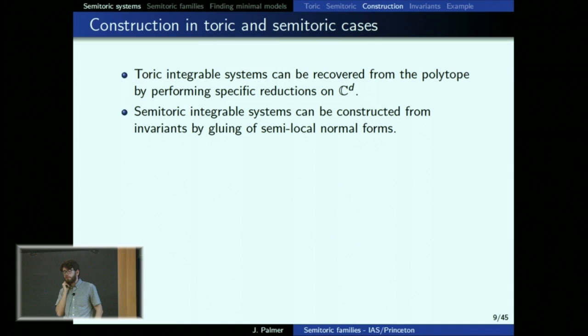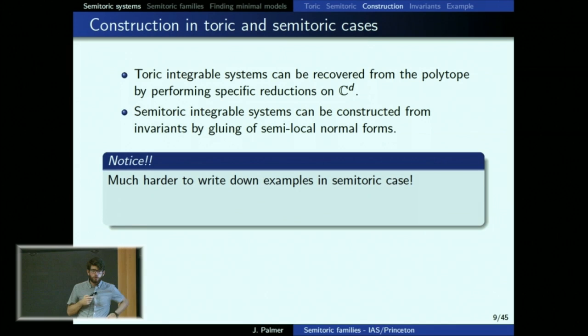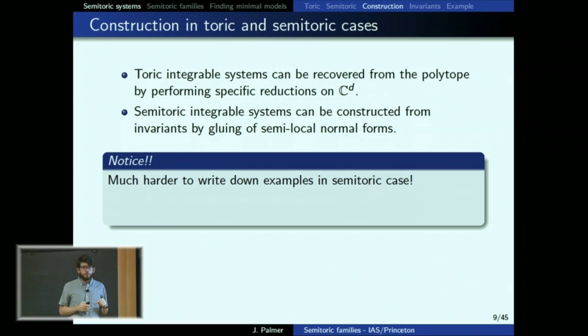You construct things and see what they look like locally, but the point is that it's harder to write down explicit examples in the semi-toric case. It's hard to detect, given some invariants, if it lives on a familiar manifold with global analytic functions. Semi-toric systems are more complicated, and the invariants are more complicated. This is all in the smooth category because the construction is by gluing, so the manifold might be a mess and the functions hard to write down.